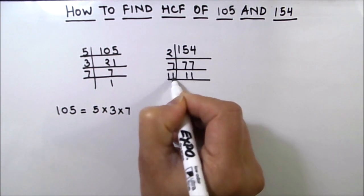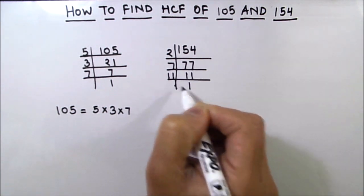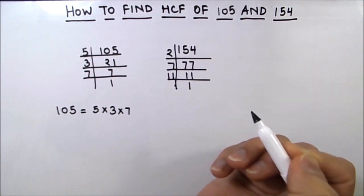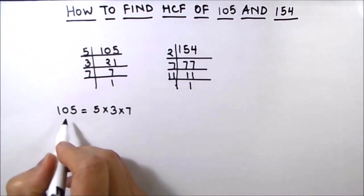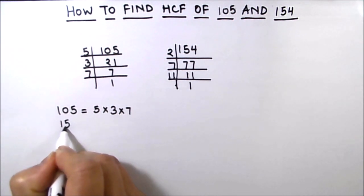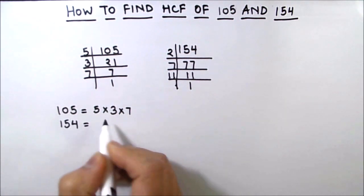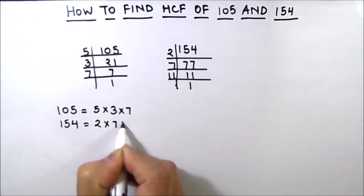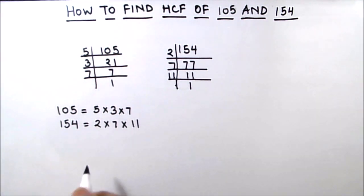Now 11 is a prime number, so it is only divisible by 11. 11 times 1 is 11. Now we'll write the factors of 154. So the factors of 154 are 2 times 7 times 11.